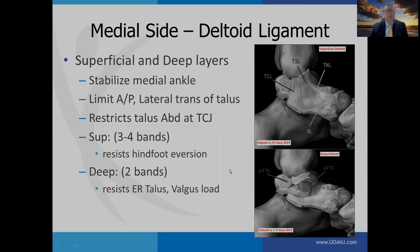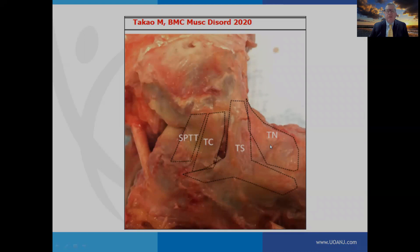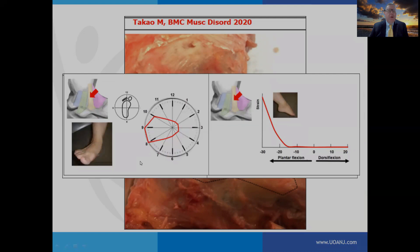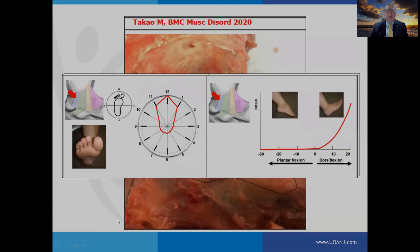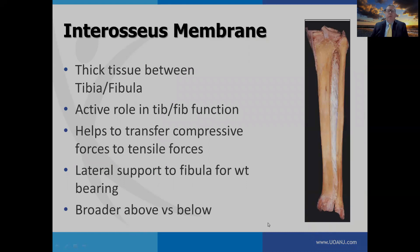On the medial side, we have the deltoid ligament — both superficial and deep layers. It stabilizes the medial ankle and helps to restrict motion of the talus. An interesting study done by Takeo placed force transducers within the ligaments and moved the ankle through various ranges of motion. They noted that tension was increased in specific ligaments with various foot positions, which is important to keep in mind when evaluating medial ankle injury.